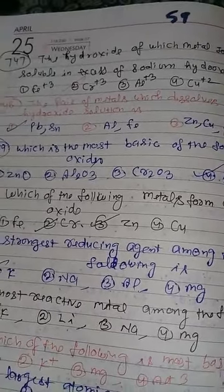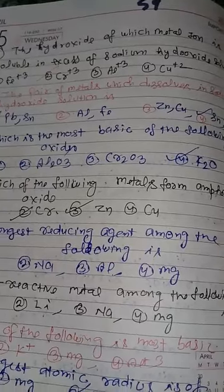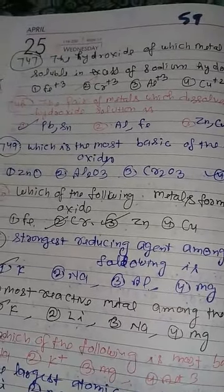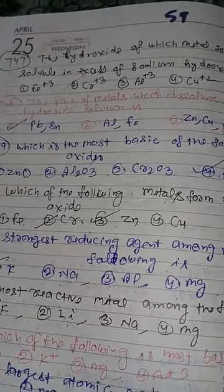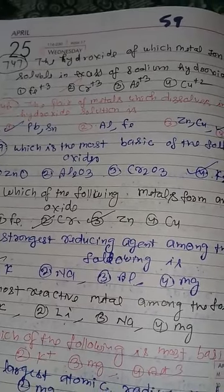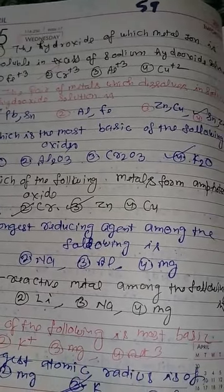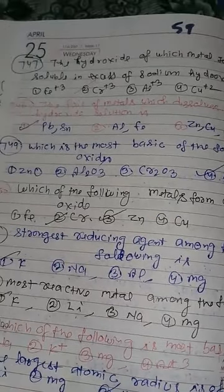Next: which is the most basic of the following oxides? Options: ZnO, Al2O3, Cr2O3, and K2O. The answer is K2O.